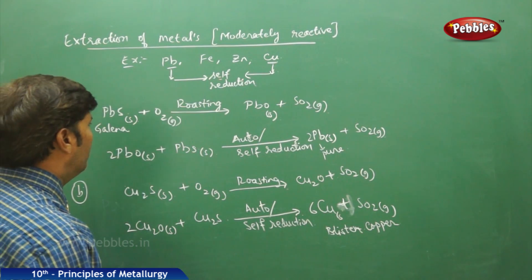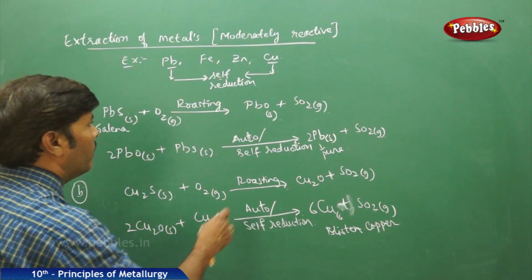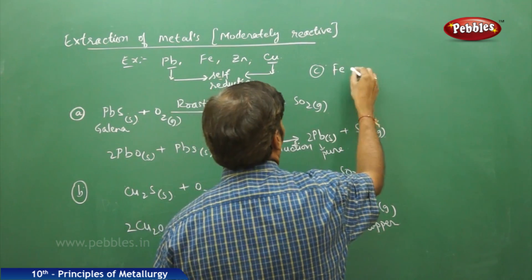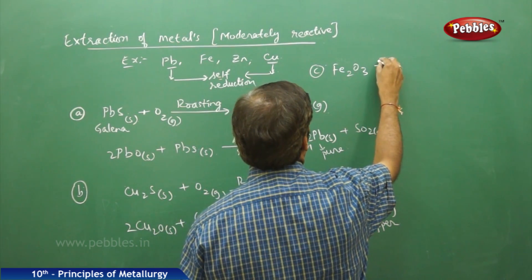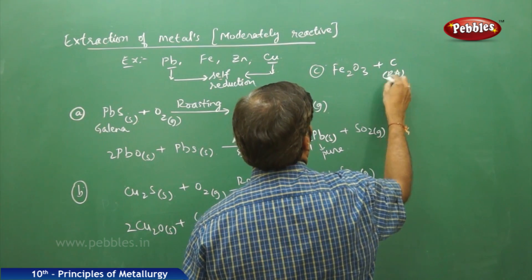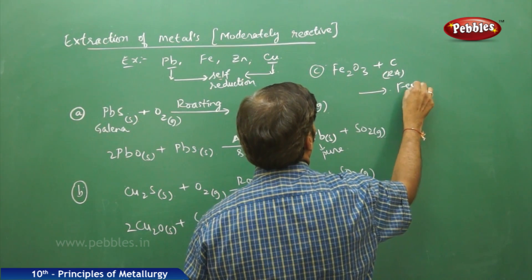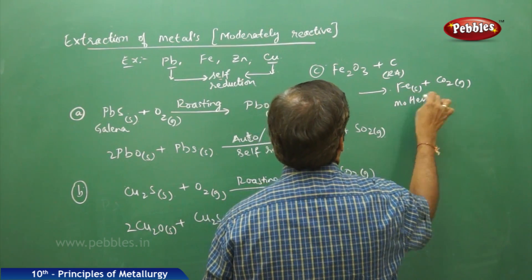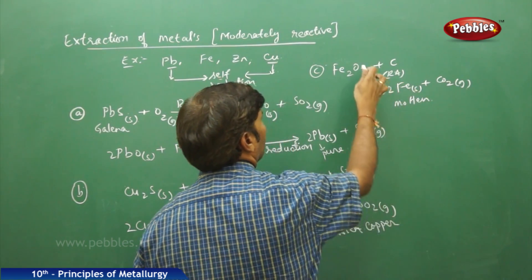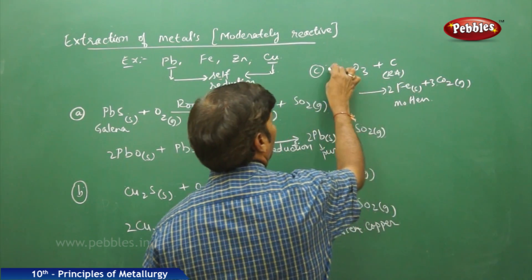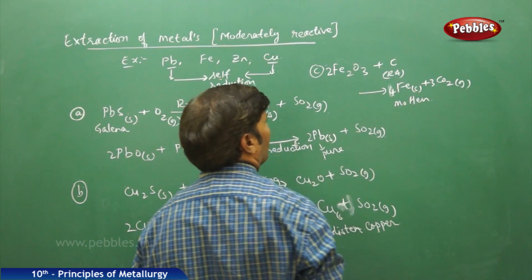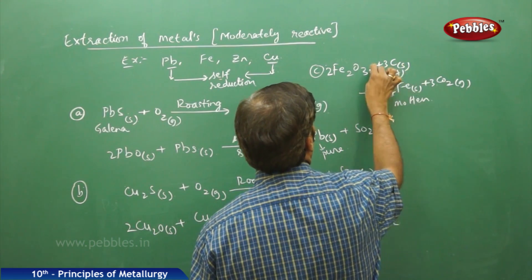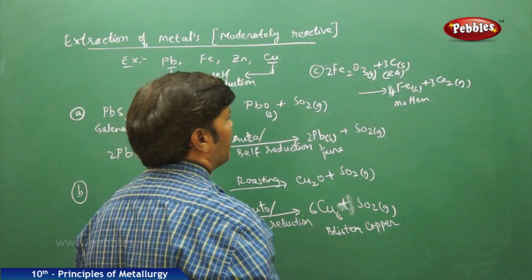The obtained copper is called blister copper. For iron: iron pyrites or oxide of iron, when treated with carbon acting as a reducing agent, gives iron solid plus CO2 gas — this is molten iron. To balance: take 2 Fe2O3 and 3 C, giving 4 Fe and 3 CO2. The number of irons, oxidants, and carbons are all balanced.